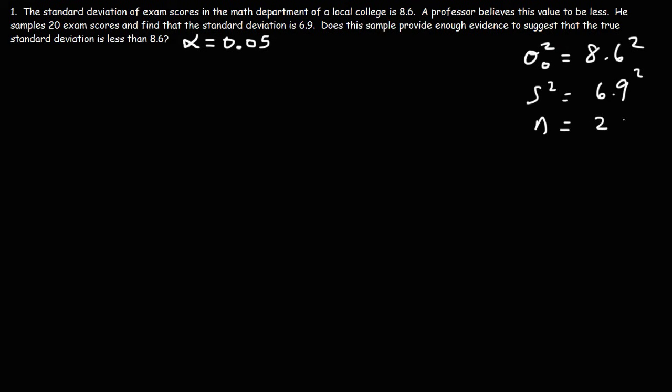The sample size is 20, and the degrees of freedom is n minus 1, which is 20 minus 1, so that's going to be 19.